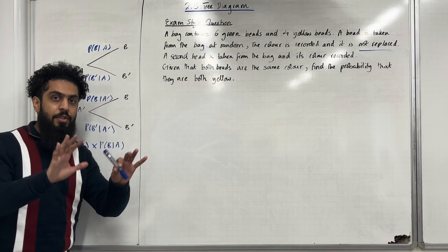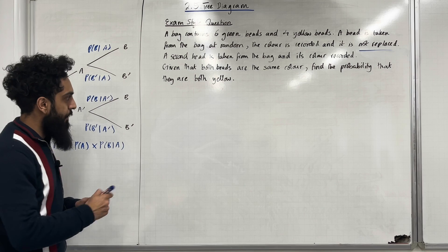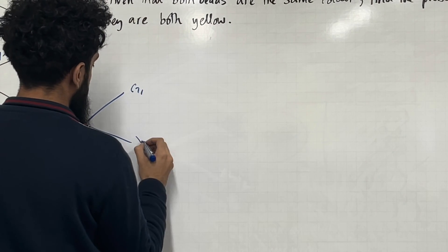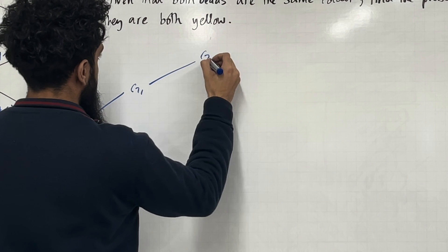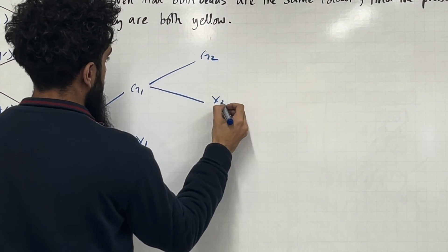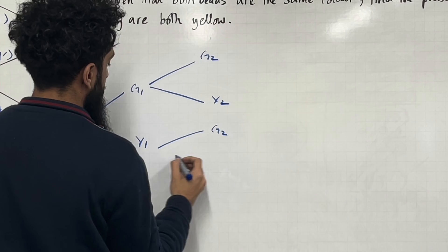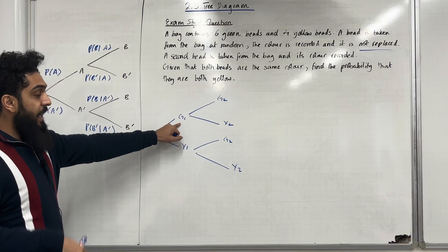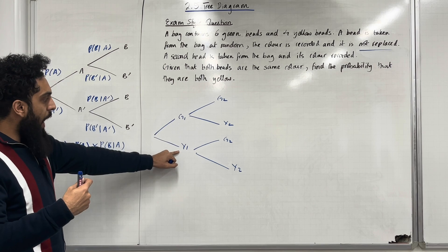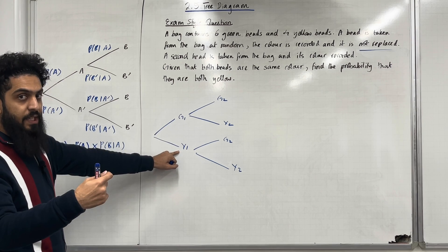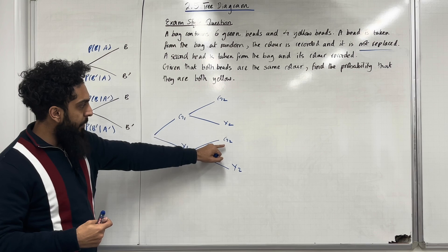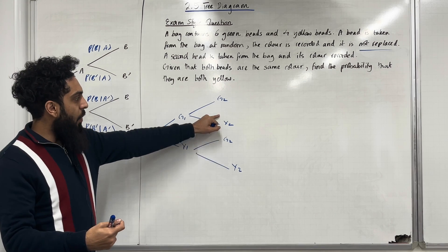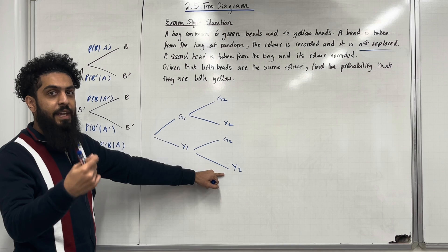Firstly, I'm going to draw a tree diagram. G1 represents the event that the first pick is a green. Y1 represents the event that the first pick is a yellow. G2 represents the event that the second pick is a green. Y2 represents the event that the second pick is a yellow.